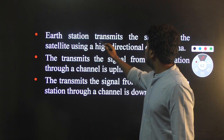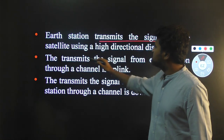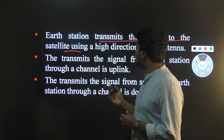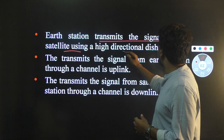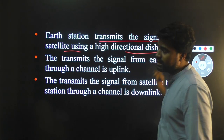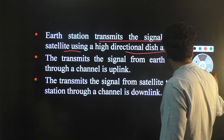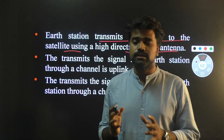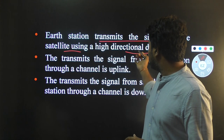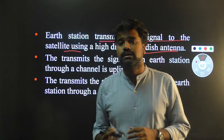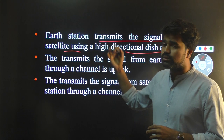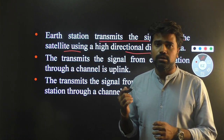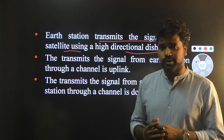The ground station transmits the signal to the satellite using a high-directional antenna. The antenna transmits the signal to the satellite through a channel called the uplink frequency.